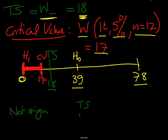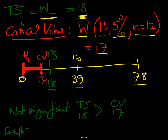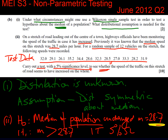Since the test statistic 18 is greater than the critical value 17, we have insufficient evidence to indicate that the speed of the traffic on this stretch of road has increased. There is nothing to suggest that speeds have increased.